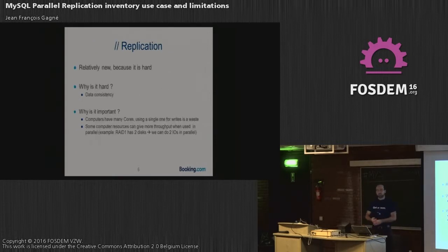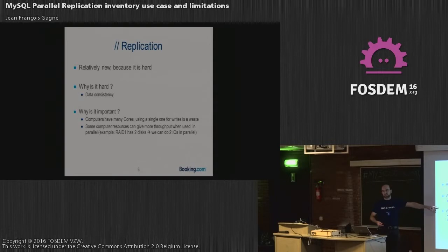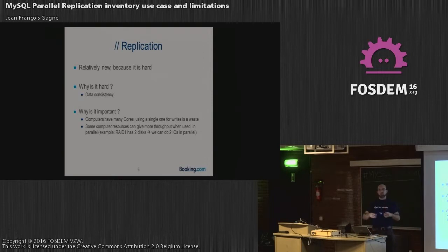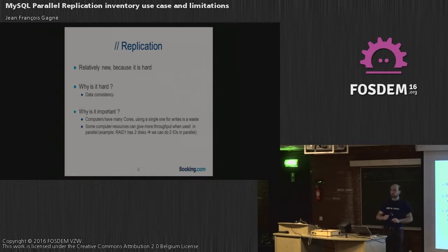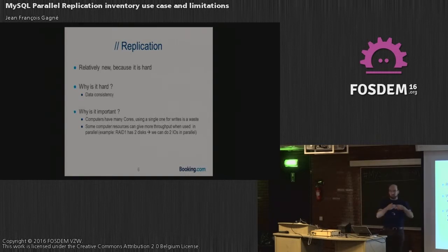Parallel replication is relatively new because it's hard. If you run transactions in parallel, you have to be very careful about data consistency. You have to make sure that transactions run in parallel on the slave give the same result as when they ran on the master. If those two transactions touch the same data, you might not get the same results. Data consistency is the challenge with parallel replication.